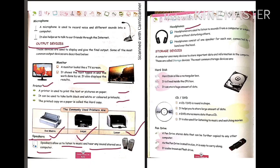The last output device is known as headphones. Headphones are also an output device that can be used to listen to music or sound. Headphones are used to listen to sounds from a computer or a music player without disturbing others. The main difference between a speaker and headphones is that if you listen to music on a speaker, you can disturb other people.